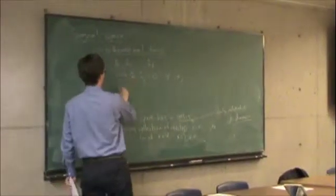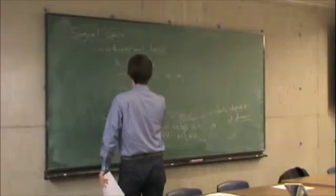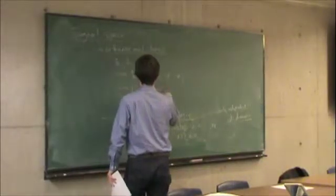The other property, so that's orthogonal, the other property is normal, which means the norm of a hat i equals 1 for all i.